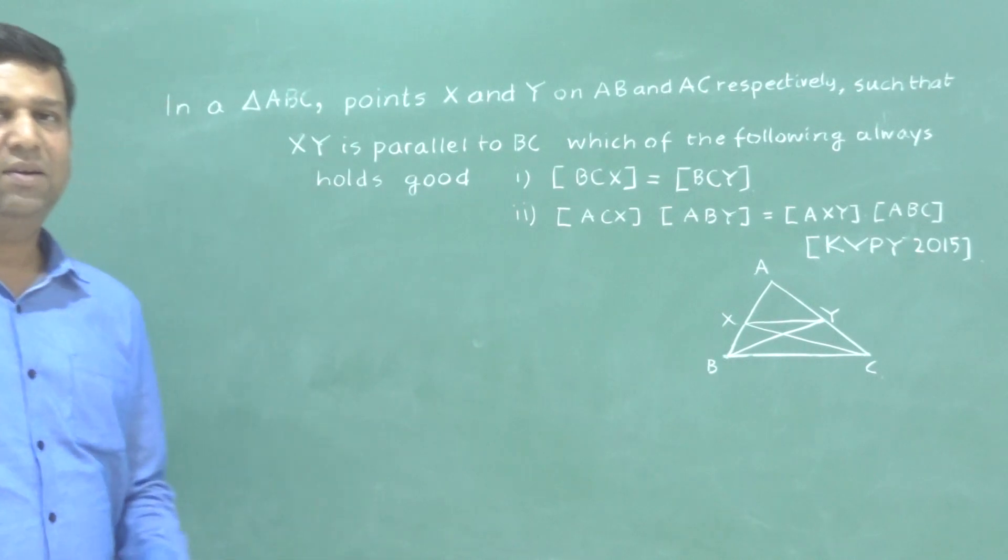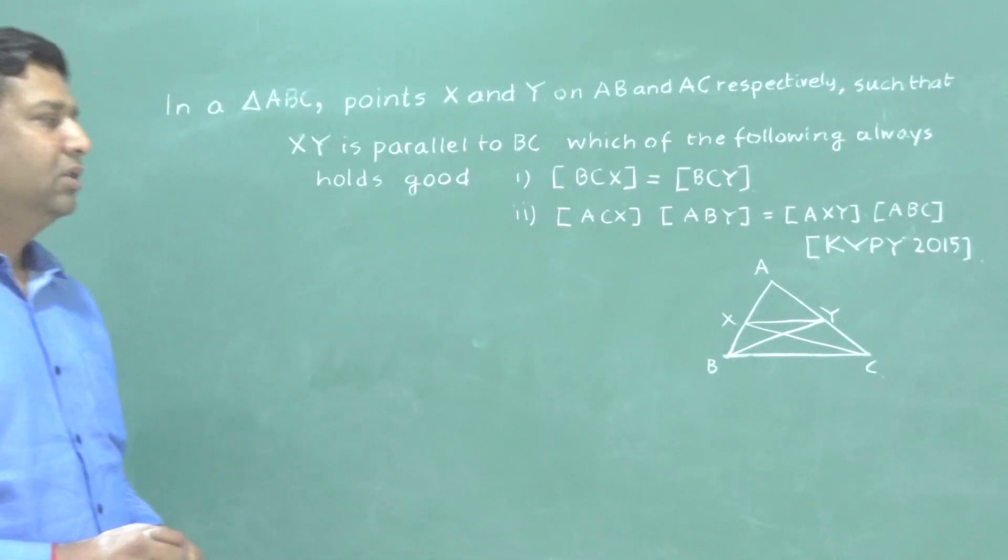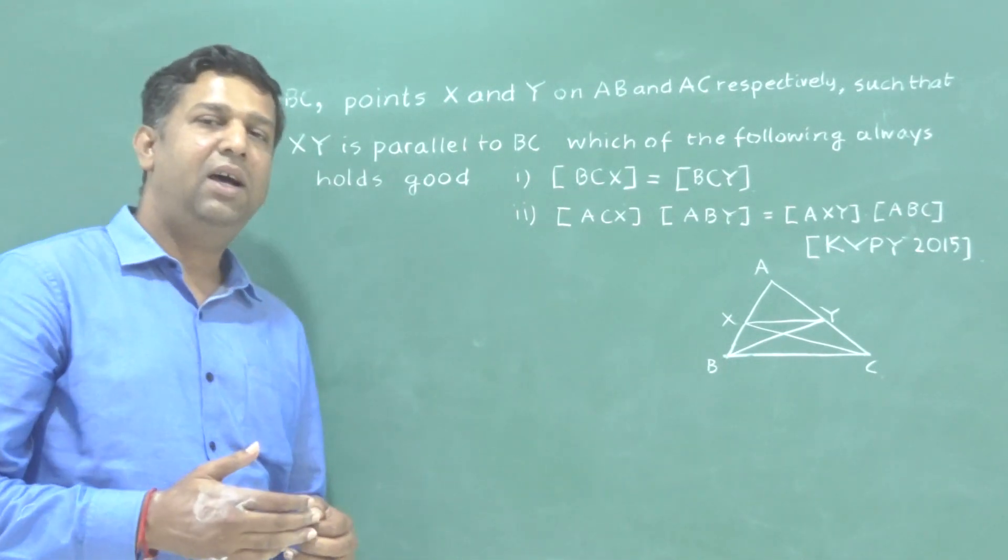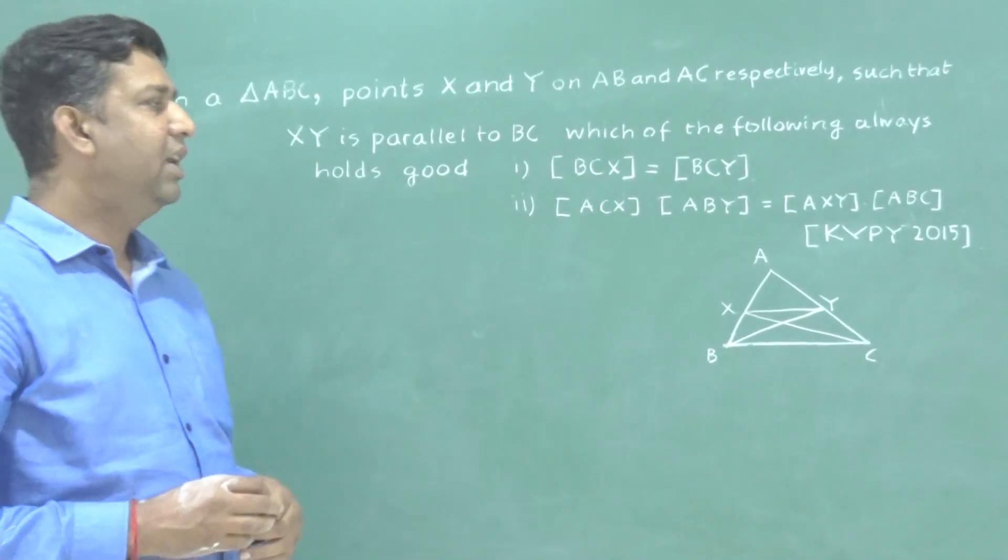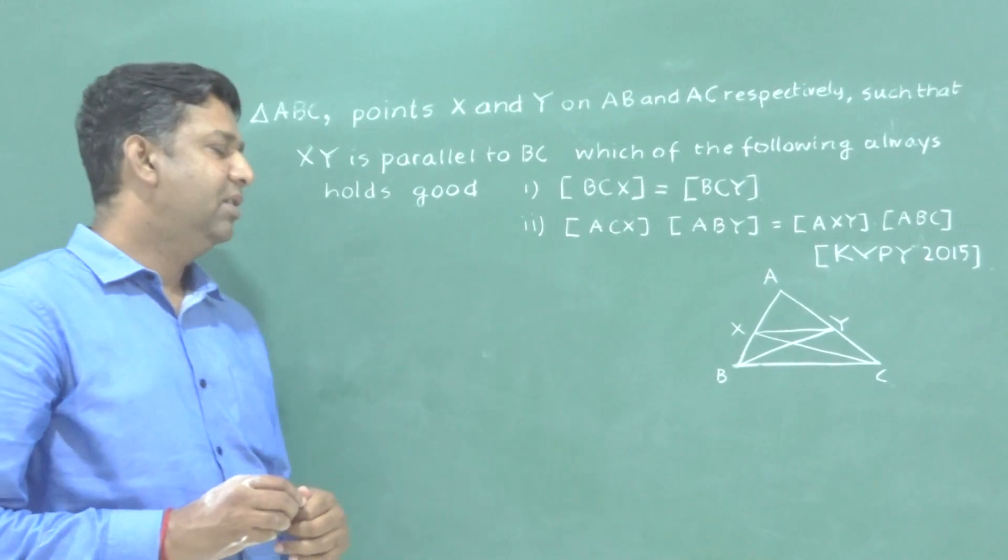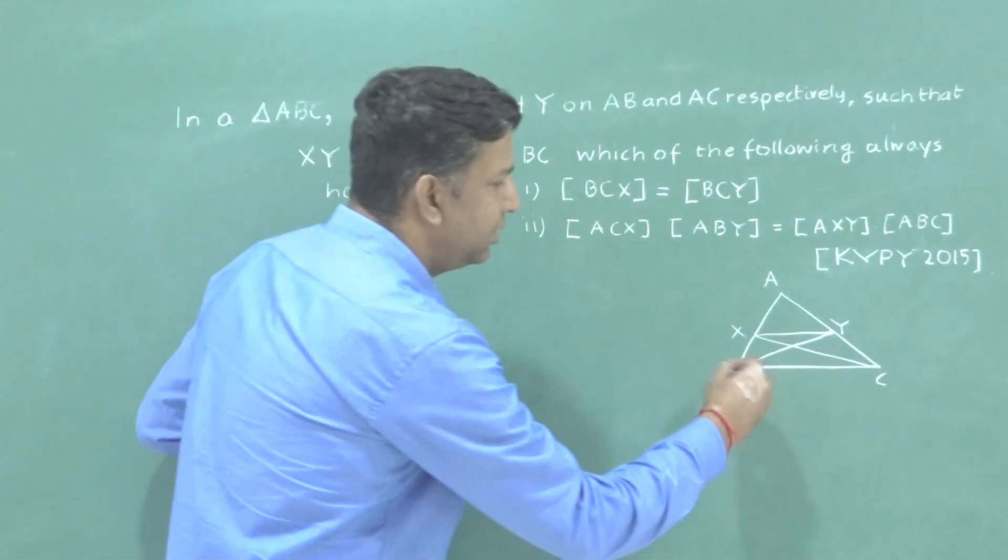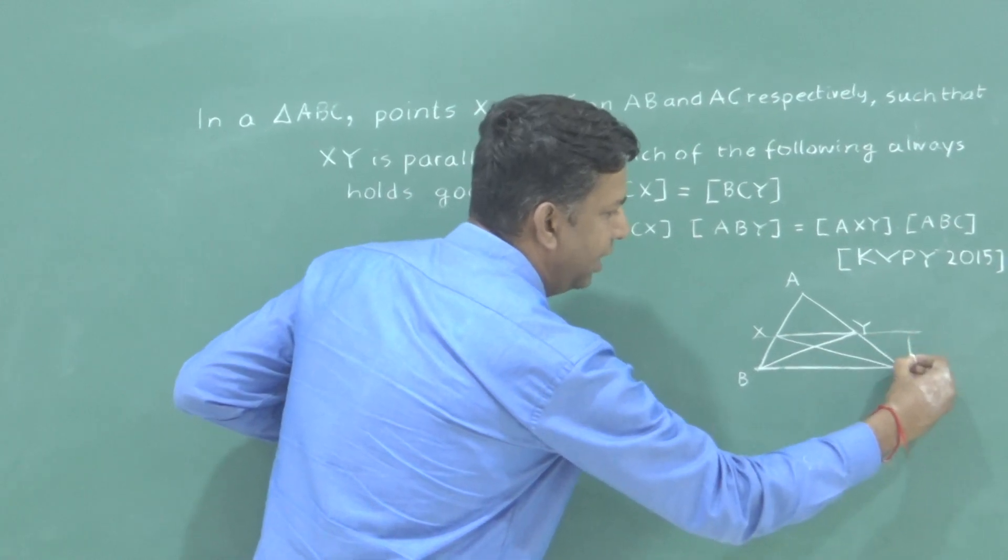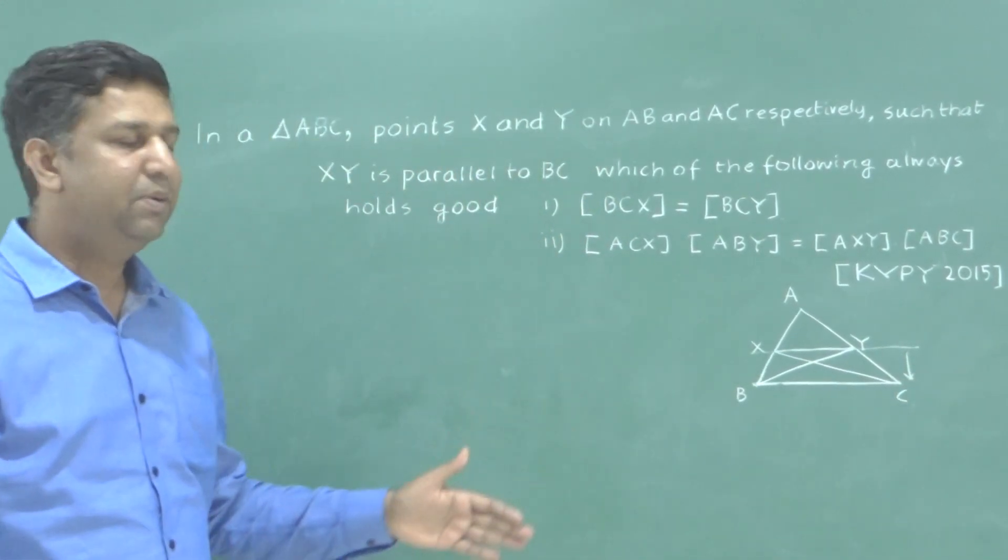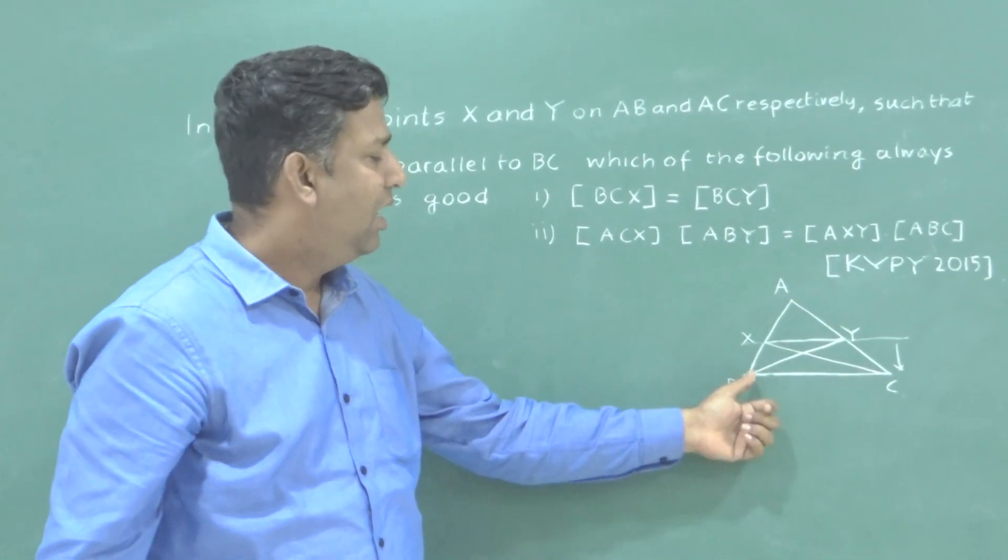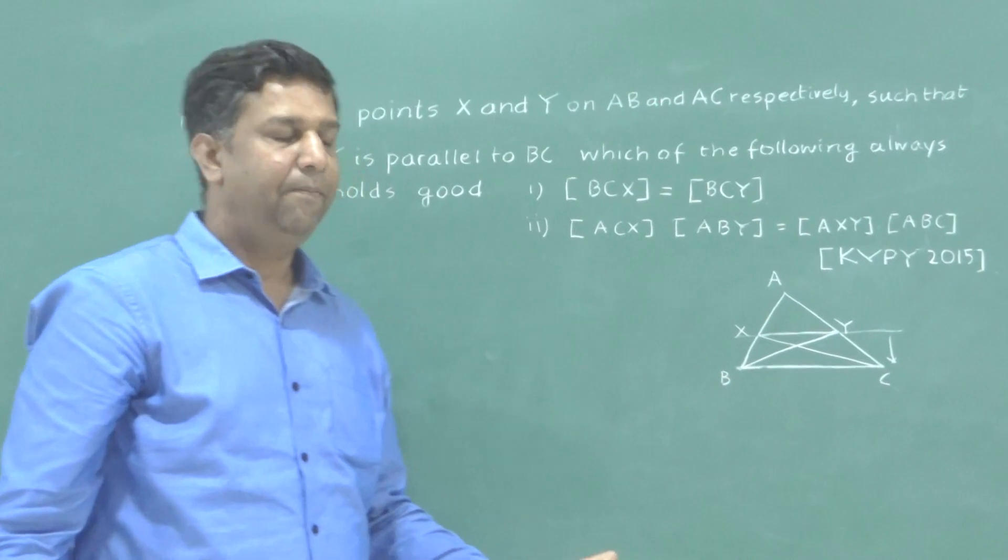The interesting part is the second one. How to do the second one, whether it's true or not. So looking into the competitive examination, where you need to do fast, you need to have a thinking approach. So I applied a very simple concept. Suppose if I take that XY, the line XY is moving towards BC. I can take a special case where the XY is moving towards BC and it coincides with BC.